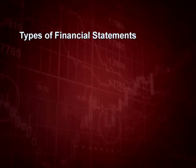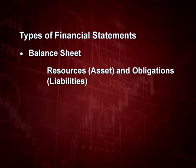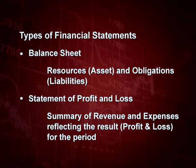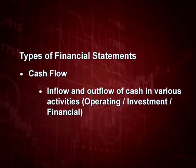What are the types of financial statements? The first is the balance sheet, which tells us about resources (assets) and obligations (liabilities). The second is the statement of profit and loss, which provides a summary of all revenues and expenses, reflecting the profit or loss for the period. The third is the cash flow statement, which details the inflow and outflow of cash in various activities: operating activity, investing activity and financing activities.